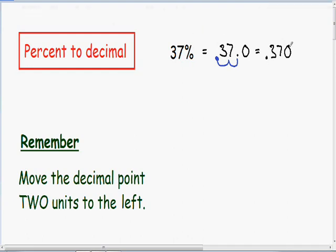You should never have a trailing zero in your final answer. .370 is exactly the same as .37. So now we converted 37% into a decimal and we have a final answer of .37.